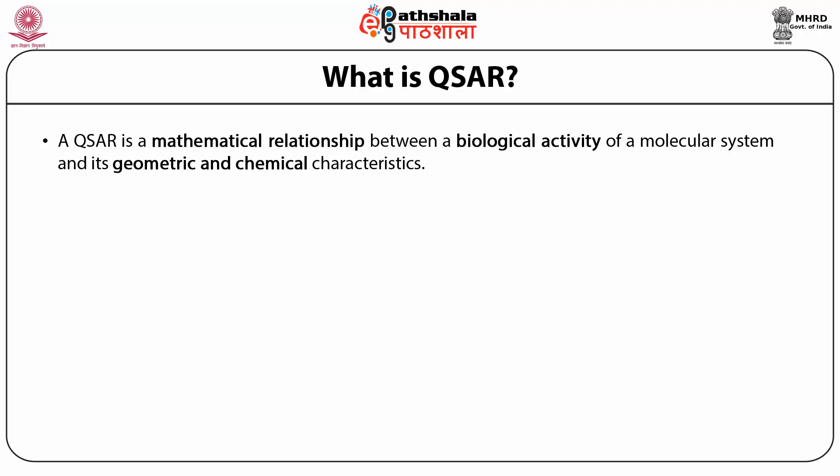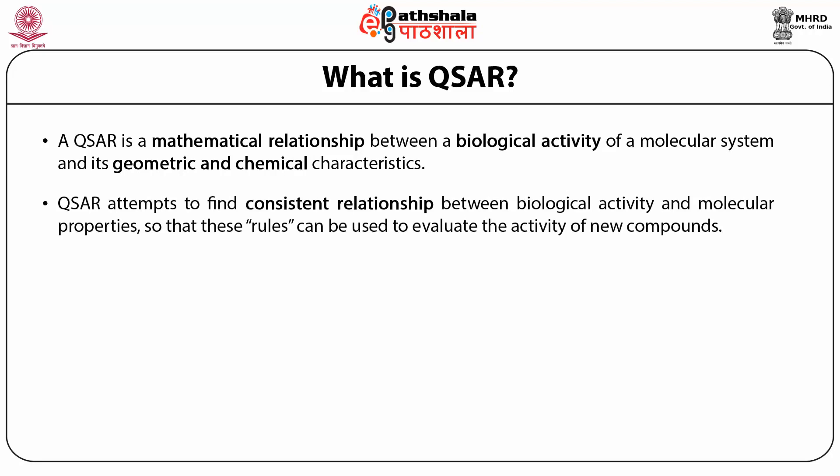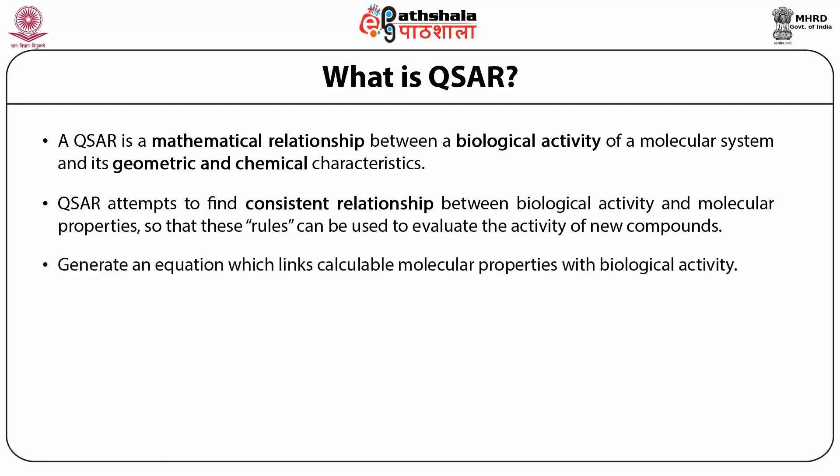It is a mathematical relationship. If we can derive this mathematical relationship consistently, we can derive some rules and using these rules build models with predictivity. However, models can also be built to explain the activity rather than for predictivity. One has to generate an equation because it is a quantitative measure and links with these properties or biological activities.